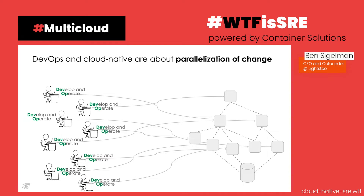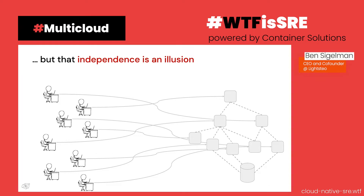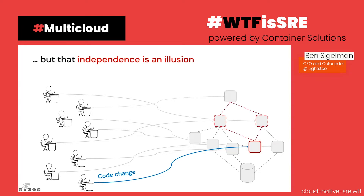But this independence of changes is a mirage — an illusion. These changes are not independent, not in the slightest. If an operator at the bottom of the stack makes a code change, commits it, CICD picks it up, builds it, and deploys it — even if the service isn't literally broken, its behavior has changed. That's the whole point. And if that change has unintended negative side effects up the stack, those can be magnified by intermediary services, causing unintended operational changes elsewhere in the system.